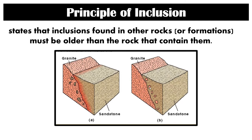Besides the four principles proposed by Steno, geologists have added more techniques for relative dating. The first is the principle of inclusion, which simply states that inclusions found in other rocks or formations must be older than the rock that contains them. In this picture, we can see inclusions within a rock layer. In figure A, there is an inclusion of sandstone inside a granite. We can say that sandstone formed first compared to granite, because there are already fragments of sandstone inside the granite — meaning when the granite was being formed, weathered sandstone was incorporated into its formation.